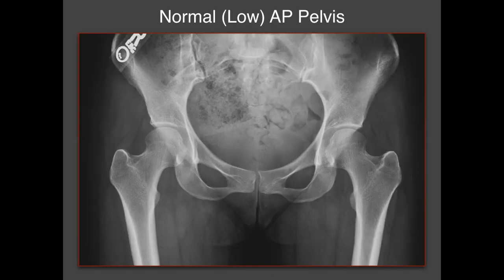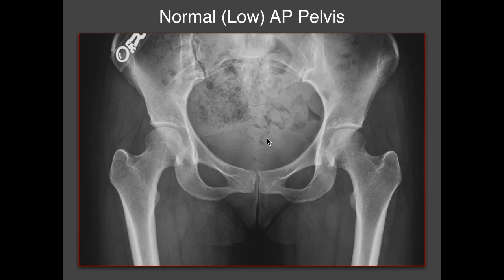Creating an image like this. It's fairly common to do a so-called low AP pelvis where we clip off the iliac crest, because that's not necessarily important for the clinical indication of the hips — we want to center up on imaging of the hips. It's important when we talk about femoral acetabular impingement that the projection be centered in the midline rather than centered over the hip.